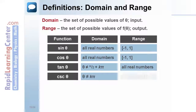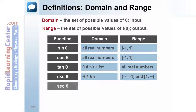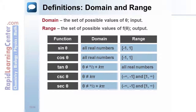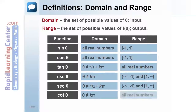The domain of cosecant of theta is all values not equal to k times pi, and the range is negative infinity to negative 1 and 1 to infinity. The domain of secant of theta is all values not equal to pi over 2 plus k times pi, and the range is negative infinity to negative 1 and 1 to infinity. The domain of cotangent of theta is all values not equal to k times pi, and the range is all real numbers. Note: k is any integer.